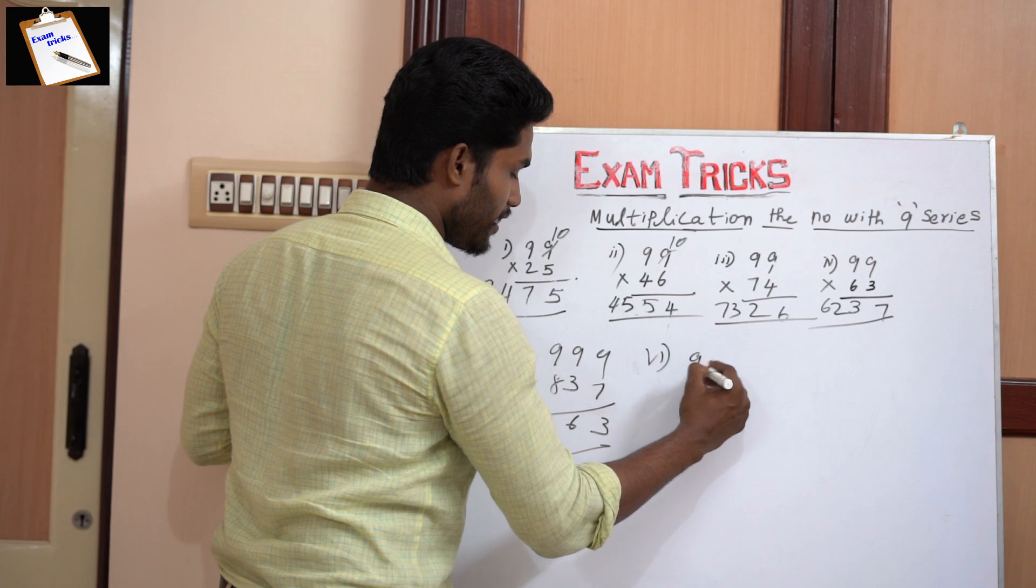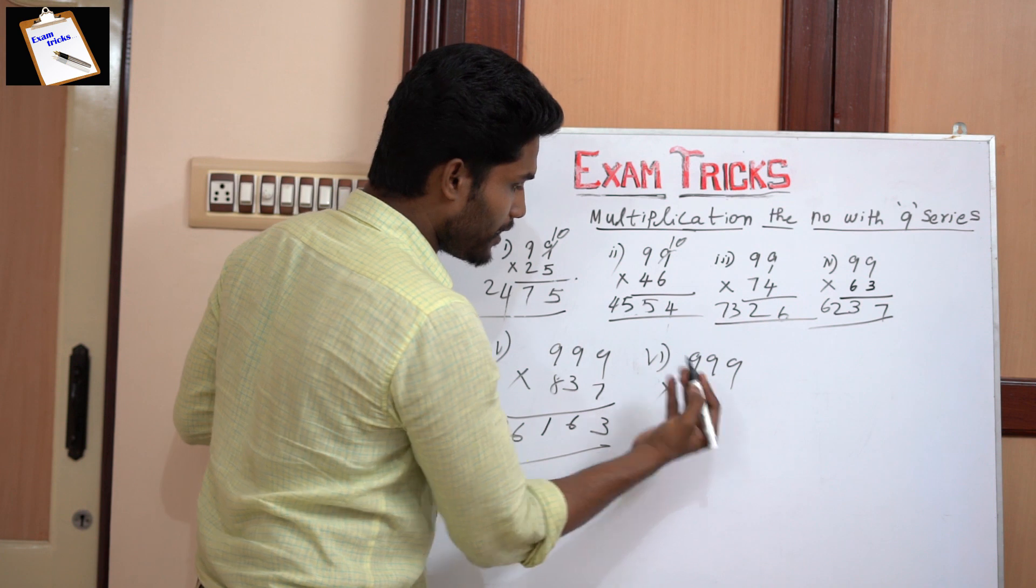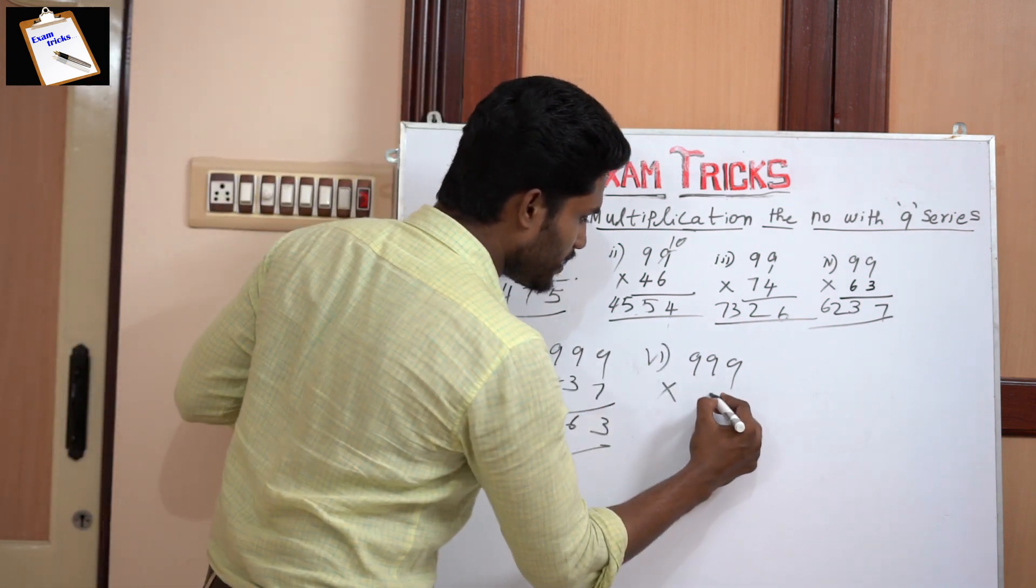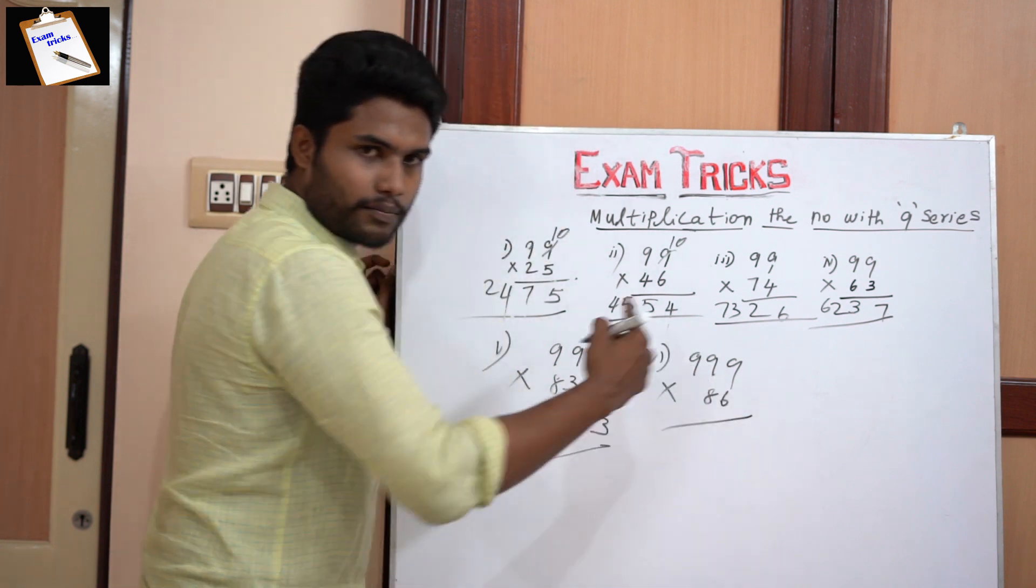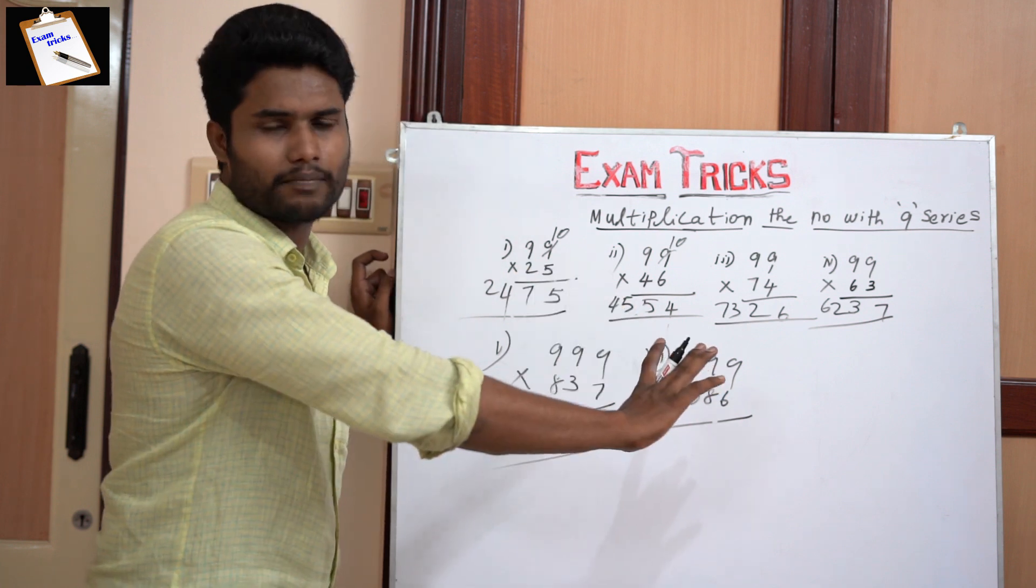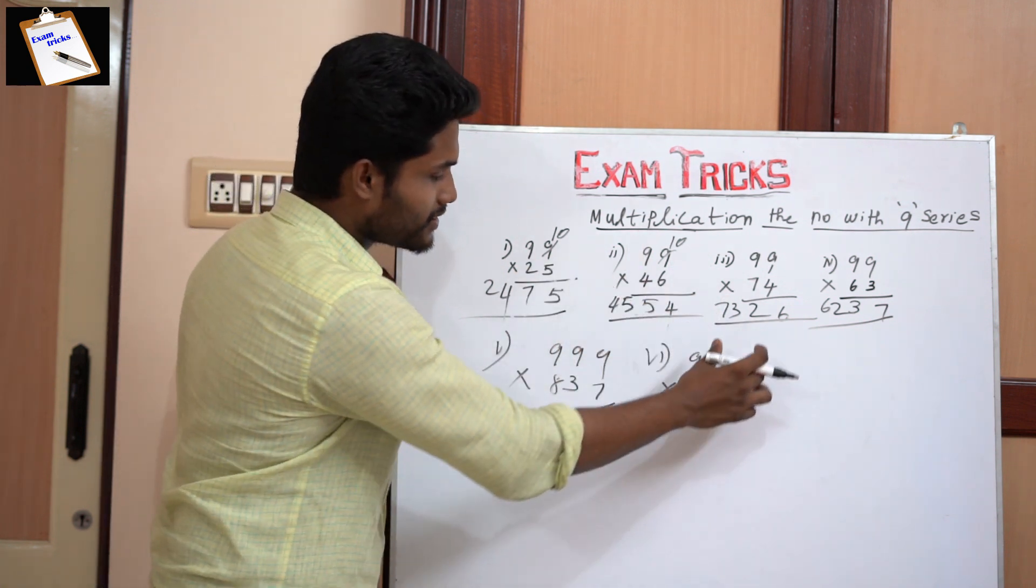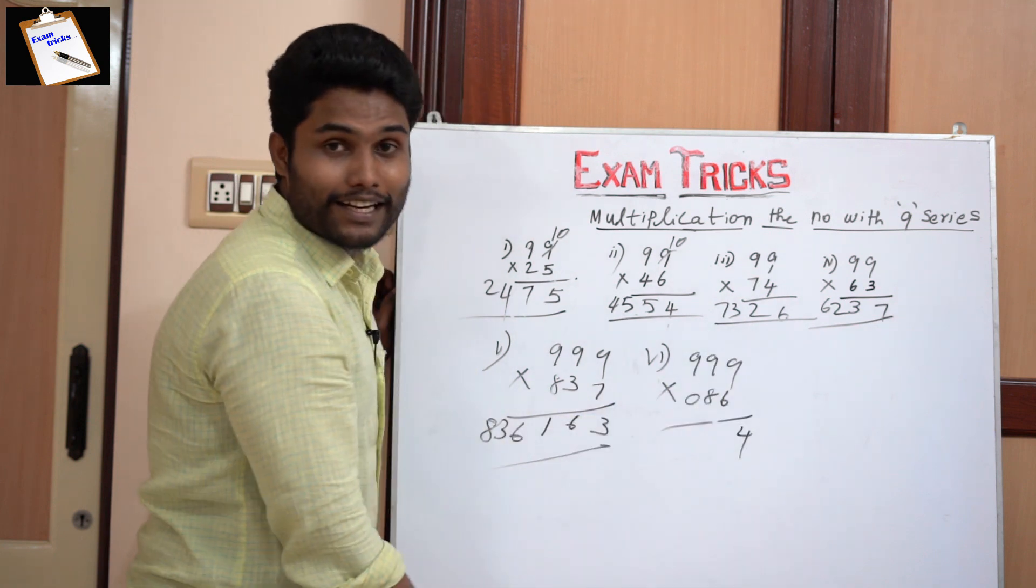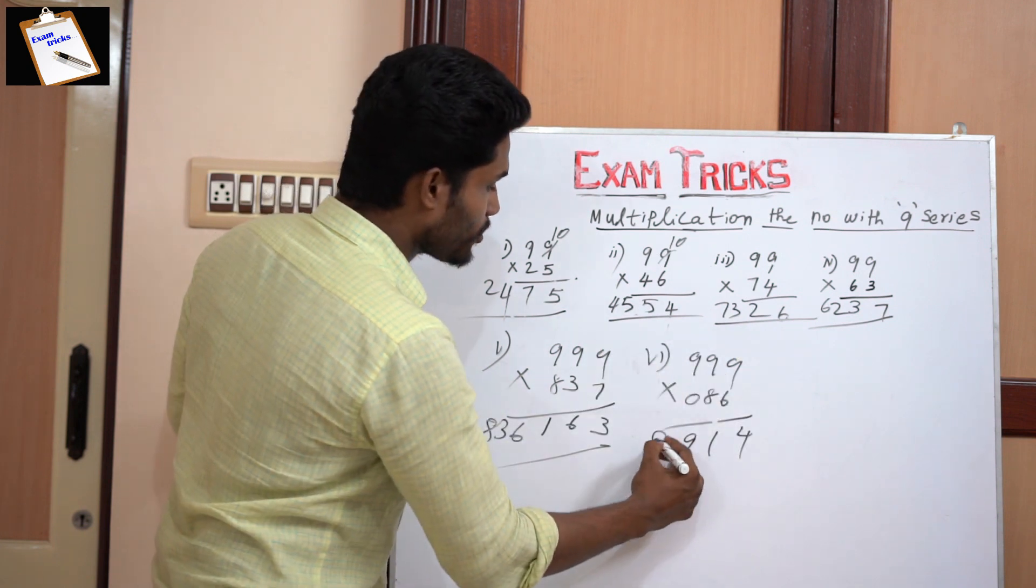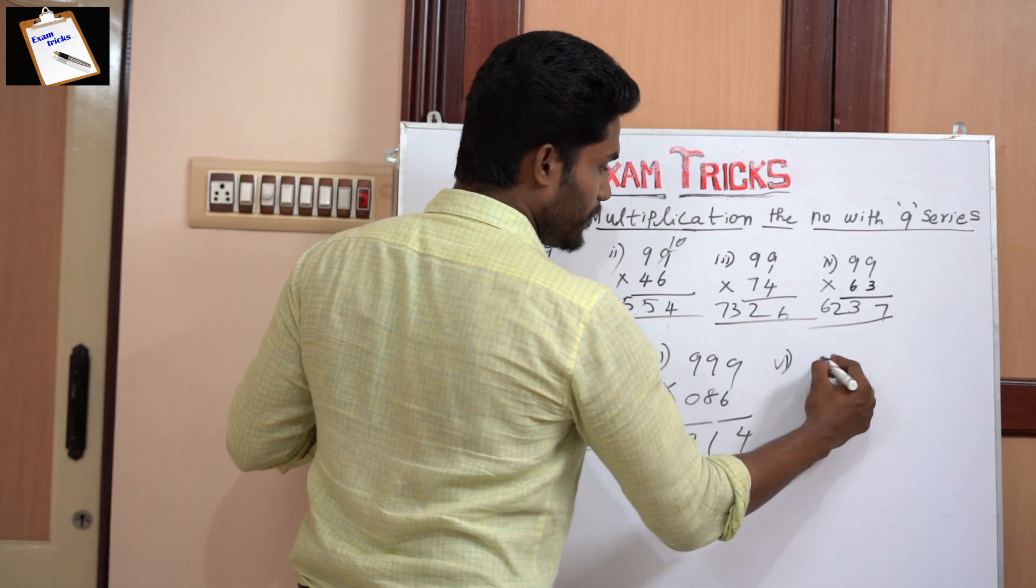One more example: 9999. Suppose a two-digit number is given, I'm writing some random number, for example 86. How to multiply? Simply, you can assume this is just like 086, otherwise the method is the same. Then what next? 10 minus 6 is 4, 9 minus 8 is 1, 9 minus 0 is 9. The given number is 86, you can write 85914.